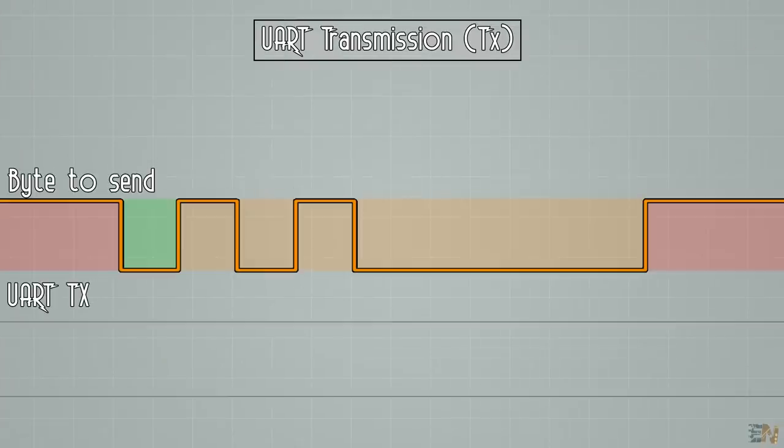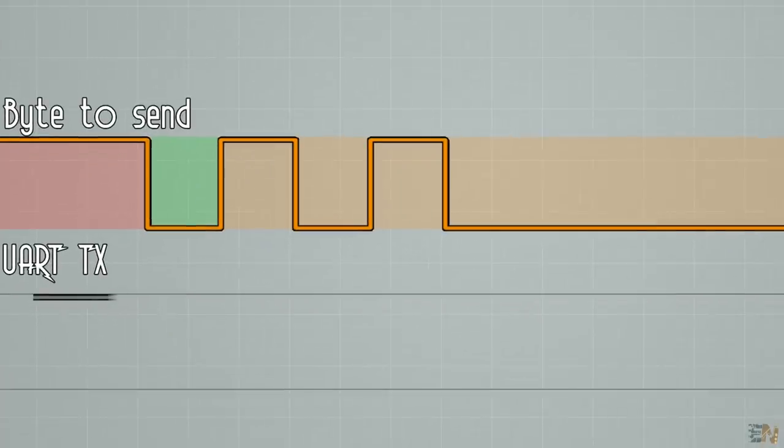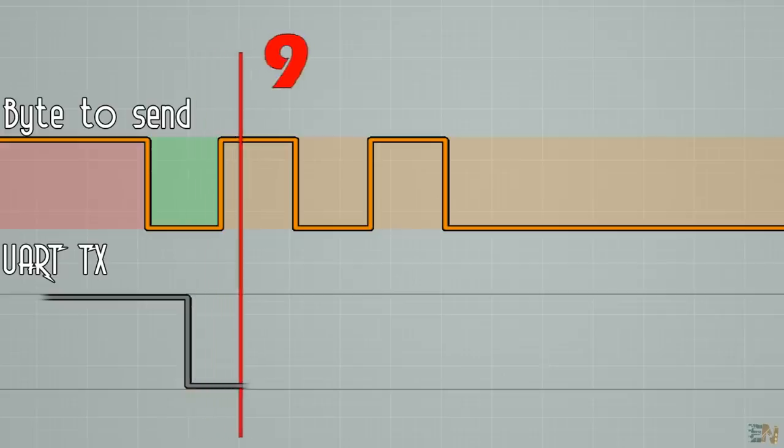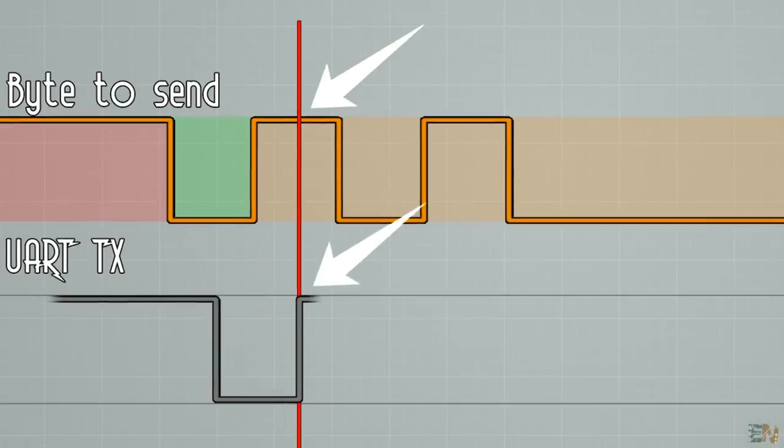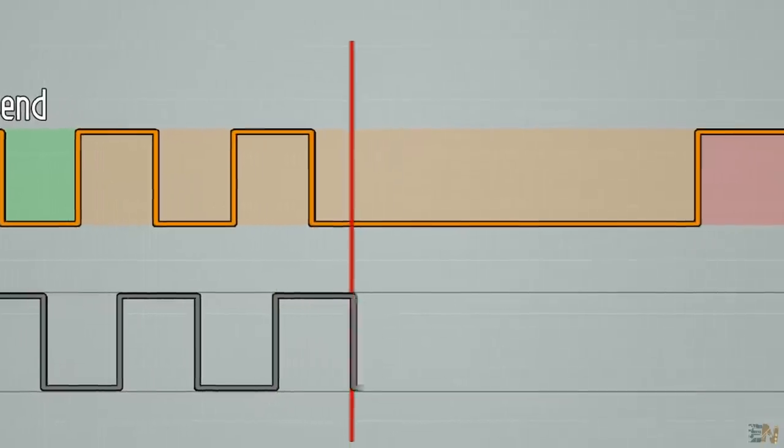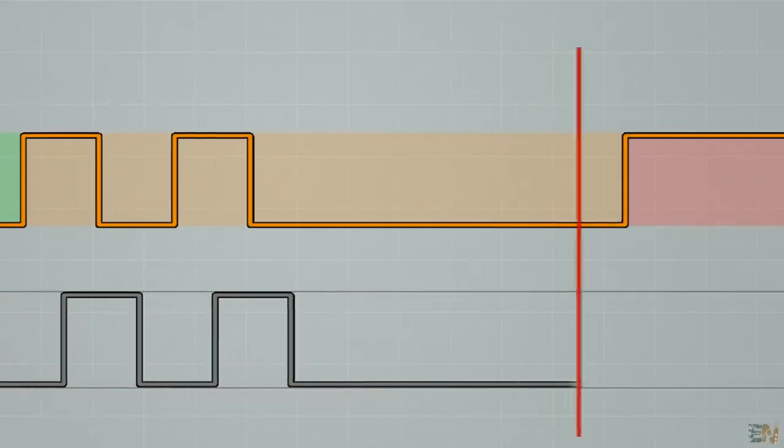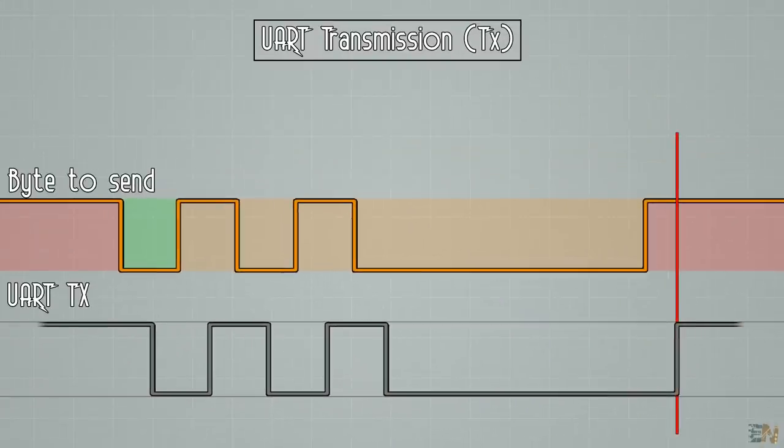To send the data we do the same but in the opposite direction. When we reach 16 tick pulses, we set the TX pin to high or low, depending on the bit value that we are about to send. Seems pretty easy, right? But now let's see that in Verilog.